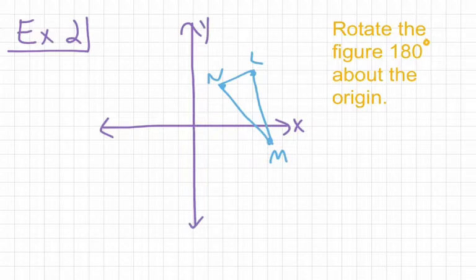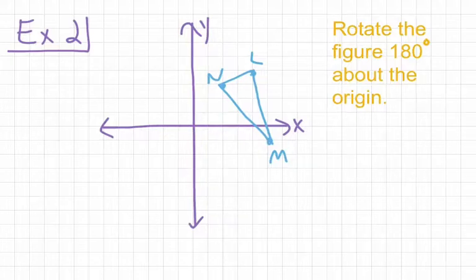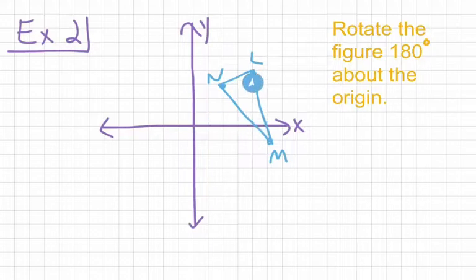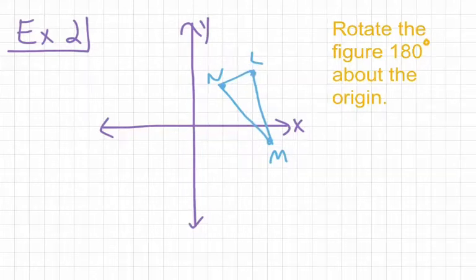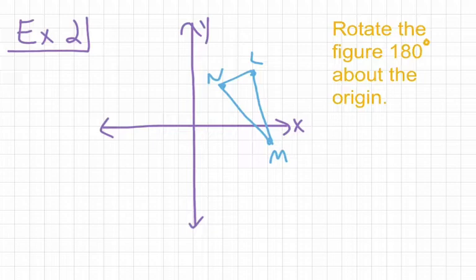By now, you've hopefully played around with the graph a little bit. Turn the graph halfway to see where your image of your triangle should be. So let's start with point L. The coordinates of point L, which we have right here, is going to be 4, 4. And so when we rotate that 180 degrees, we're going to end up at negative 4 comma negative 4, which is going to be right here. So we're going to put our L prime at that point.